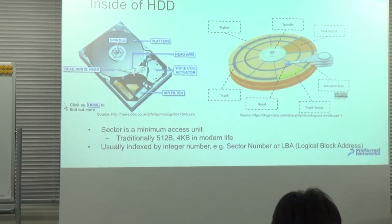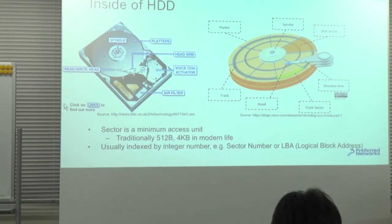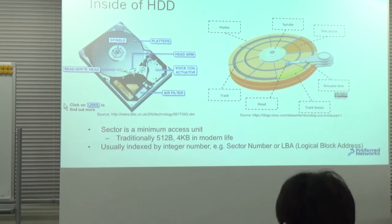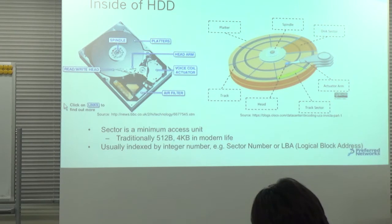Now, how does the hard disk work? This slide shows a physical view of the hard disk. There are many parts: the platter on the top, the medium, and the head. The platter is rotating at around 5,500 to 15,000 RPM. The right side shows a logical view of the hard disk.